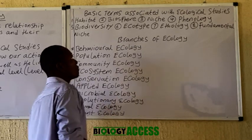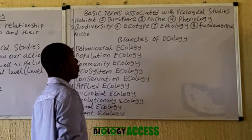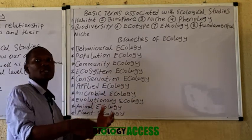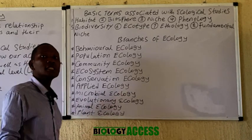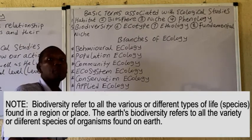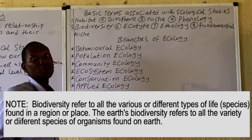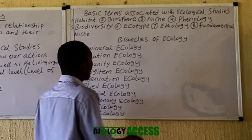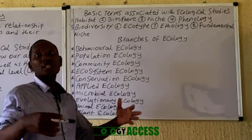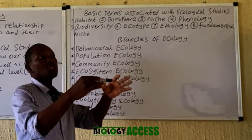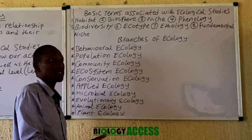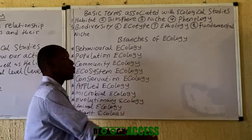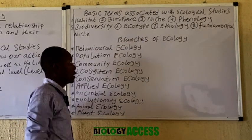We have phenology, which is associated with how natural phenomena or cyclic events in nature actually affect organisms. We have biodiversity, which refers to the various types and different categories of species present in a particular geographical location. When a place has great biodiversity, it means the number of different species there is very large; when biodiversity is low, it means few species are present. We also have the ecotype, which is a subpopulation of a particular geographical location that is distinctly adapted to that place, sometimes having developed genetic features that enable them to adapt to that particular environment.